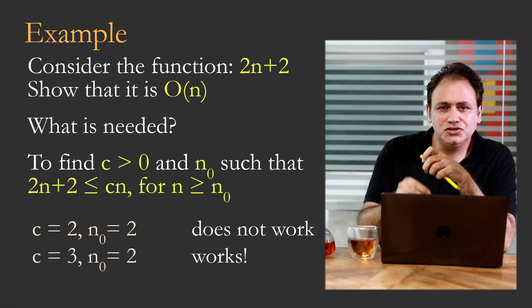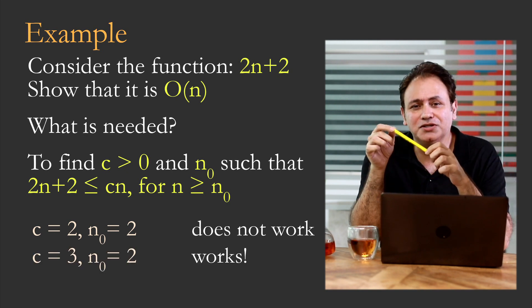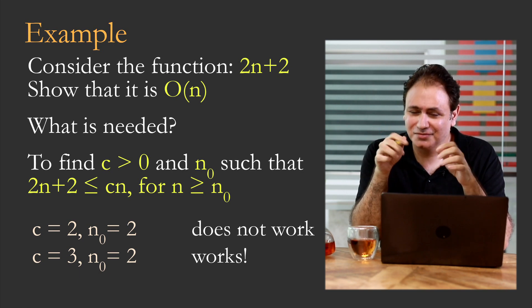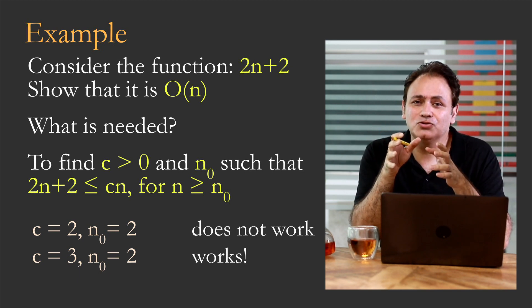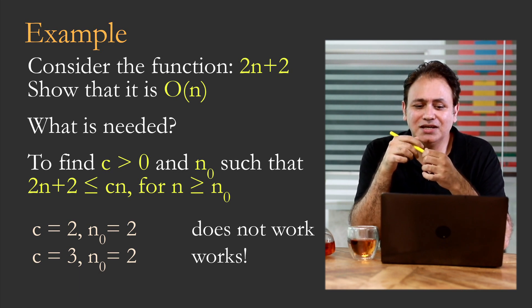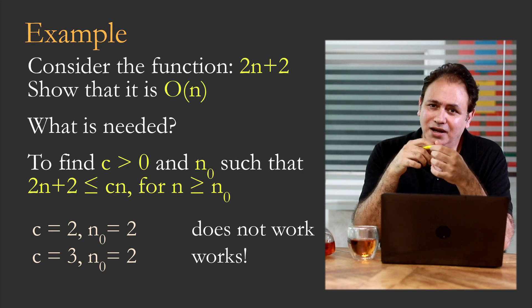But if we change c to be 3 and n₀ to be 2, it works. You can work that out, it works. So essentially, that's what you need to do to be able to show that a particular function, in this case 2n+2, is actually O(n).